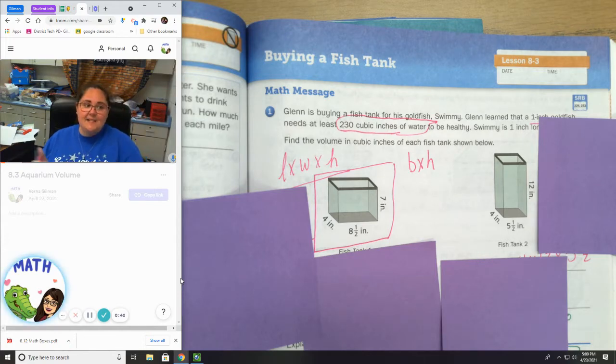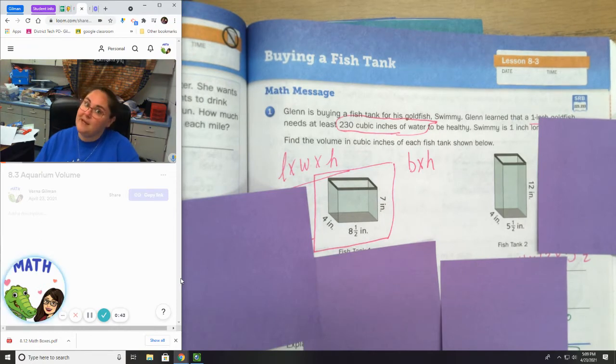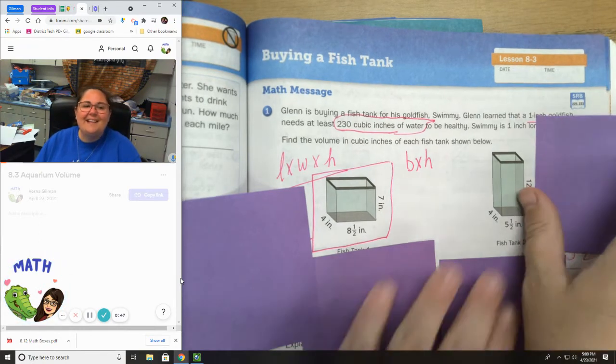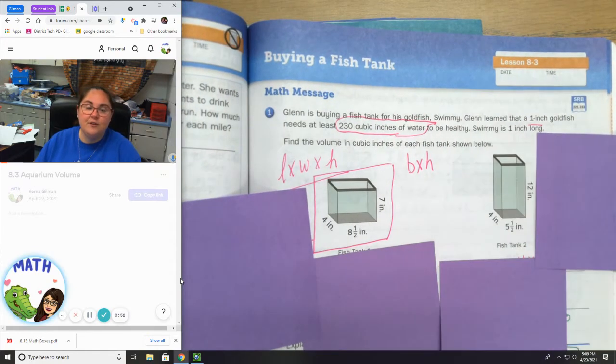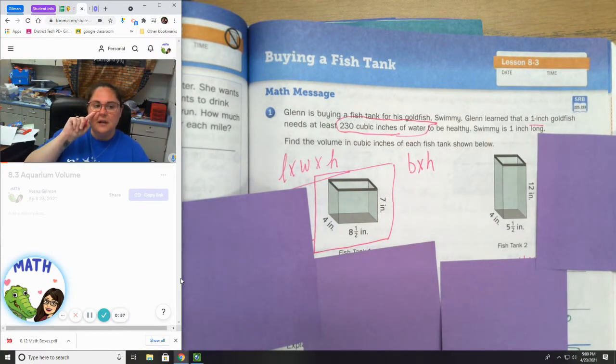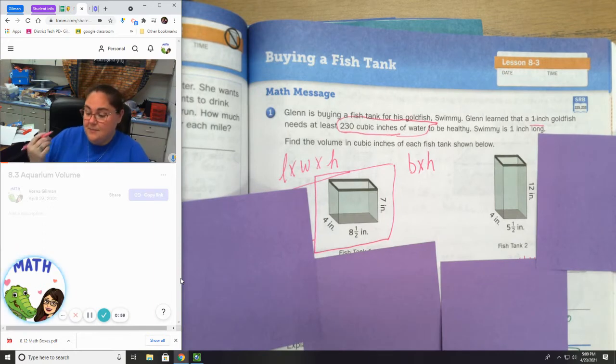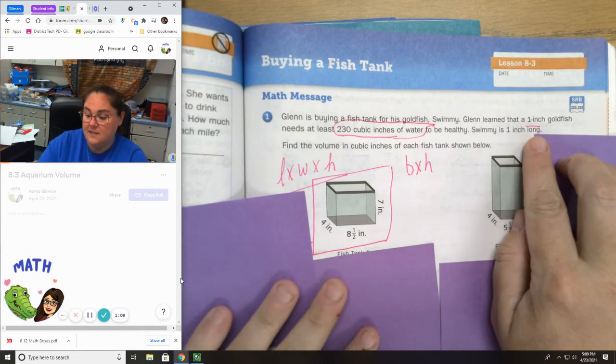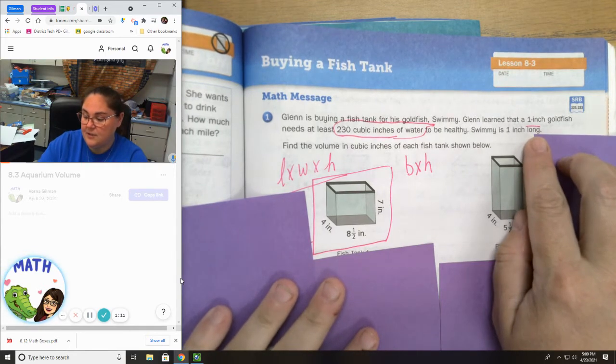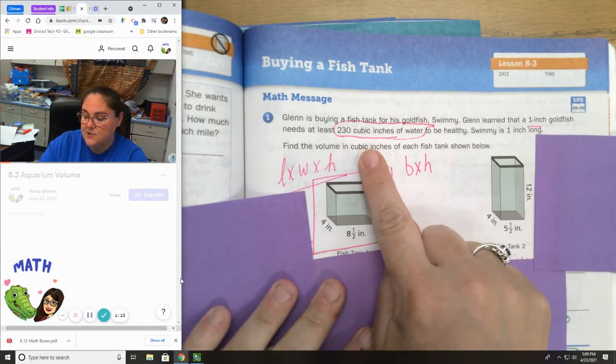It says, Glenn is buying a fish tank for his goldfish Swimming. Glenn learned that a one-inch goldfish needs 230 cubic inches of water to be healthy. So if you have one goldfish, they need 230 inches. To me that's important, so I'm going to underline that so I have that in my mind. Swimming is one inch long. So, this is how much water and how much space Swimming will need.